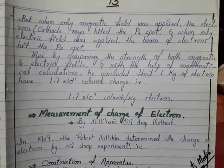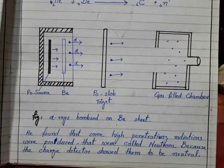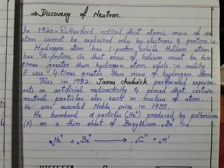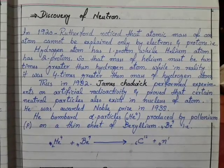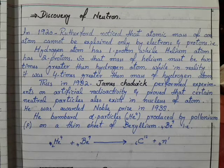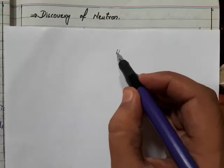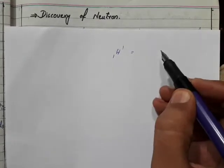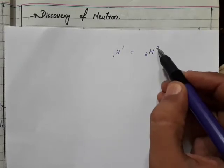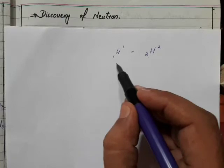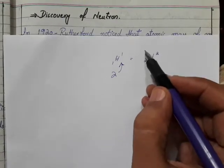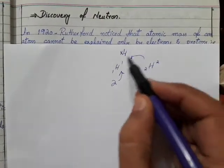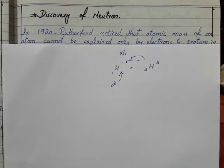Next is the discovery of the neutron. Rutherford noticed that when hydrogen has one electron and one proton, and helium has two electrons and two protons, then helium should be two times more mass than hydrogen. However, in reality this was four times, which led to the discovery of the neutron.